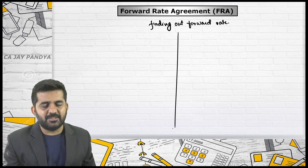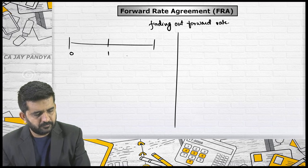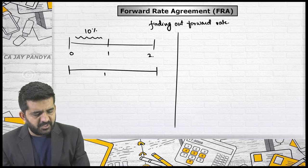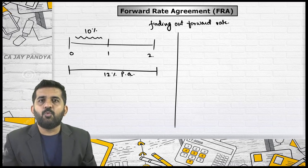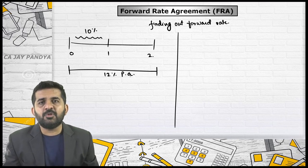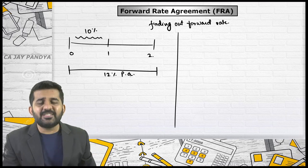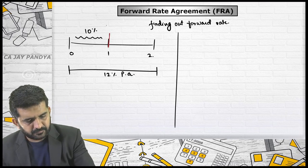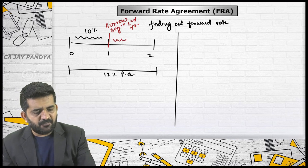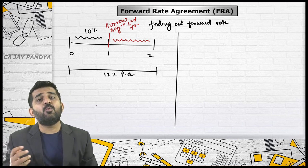If one-year rate is 10% and two-year rate is 12% per annum, this means if you want to borrow today for one year the rate is 10%, and for two years the rate is 12% per annum. The concept is: if you want to borrow after one year, at the beginning of the second year, for the period of one year, what will be the rate applicable?